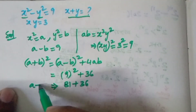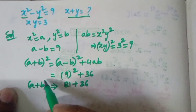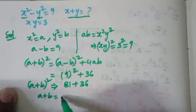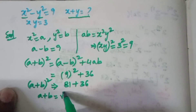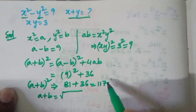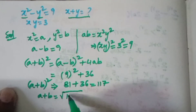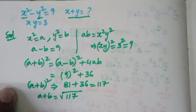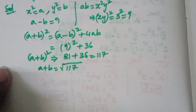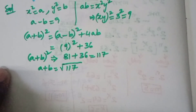So a plus b whole square is equal to 81 plus 36, which is 117. Therefore, a plus b is equal to the square root of 117. Now what the problem is asking us to find is the value of x plus y.